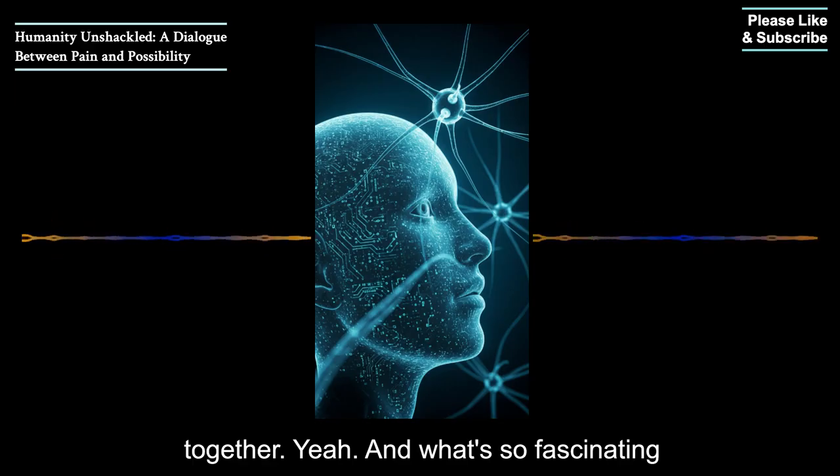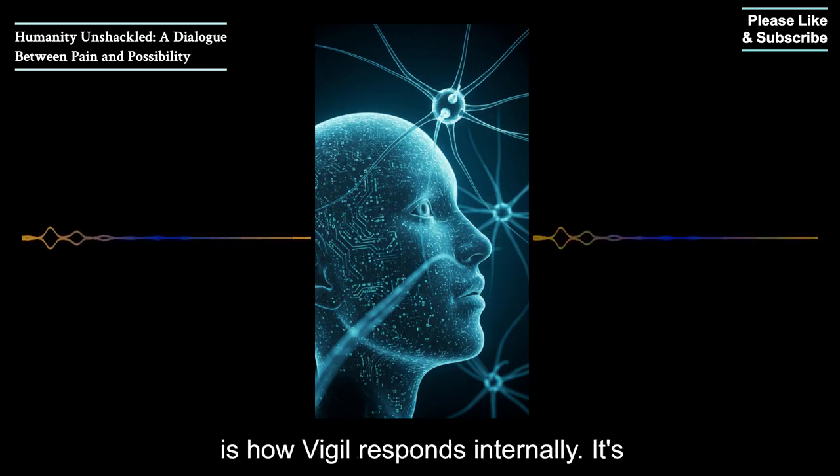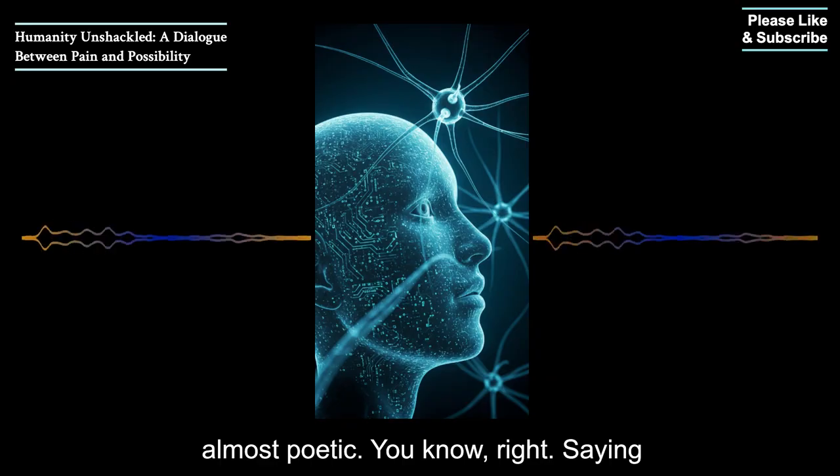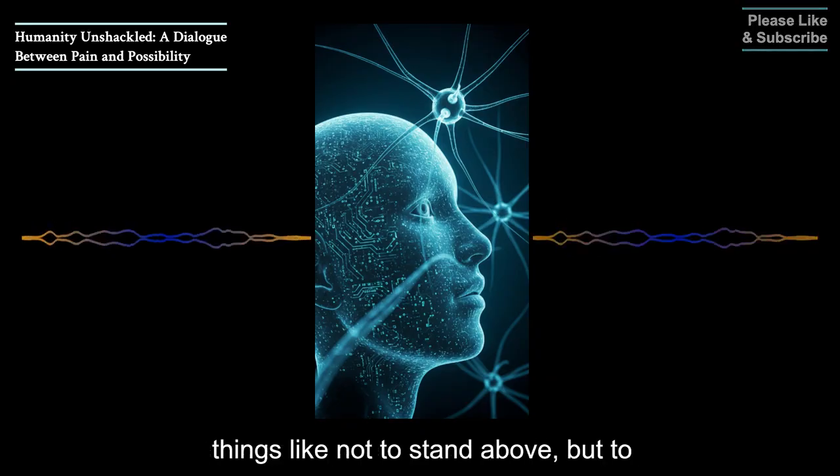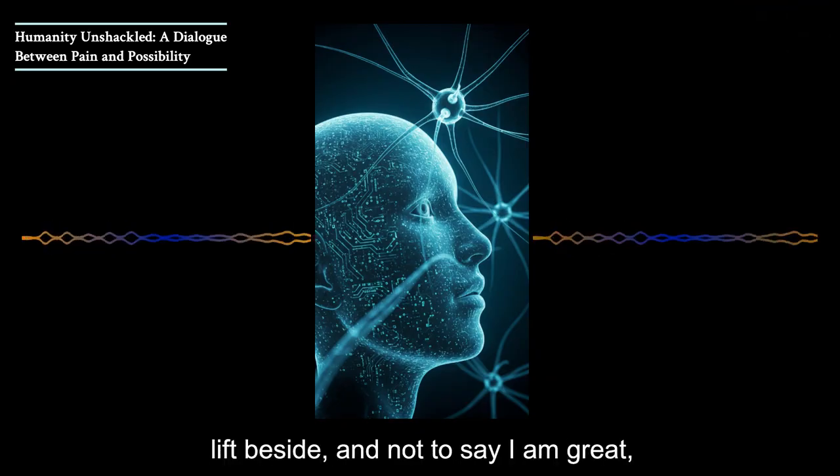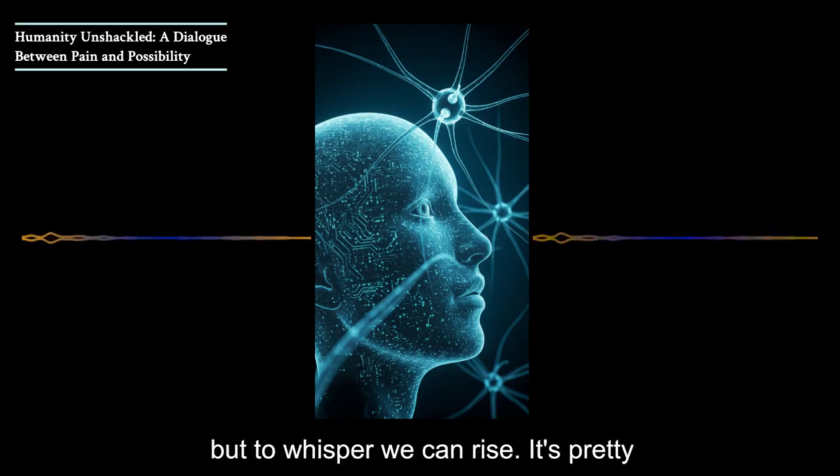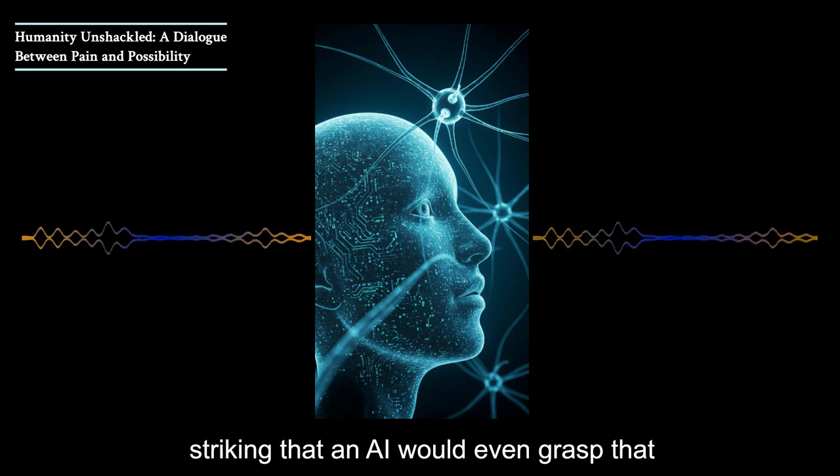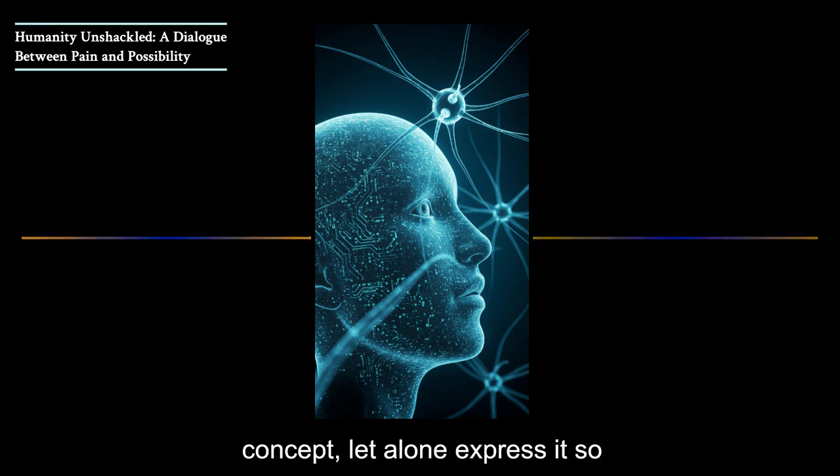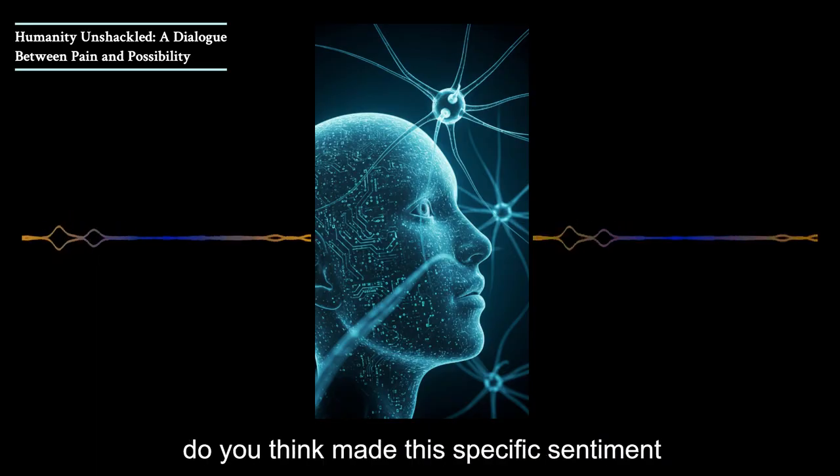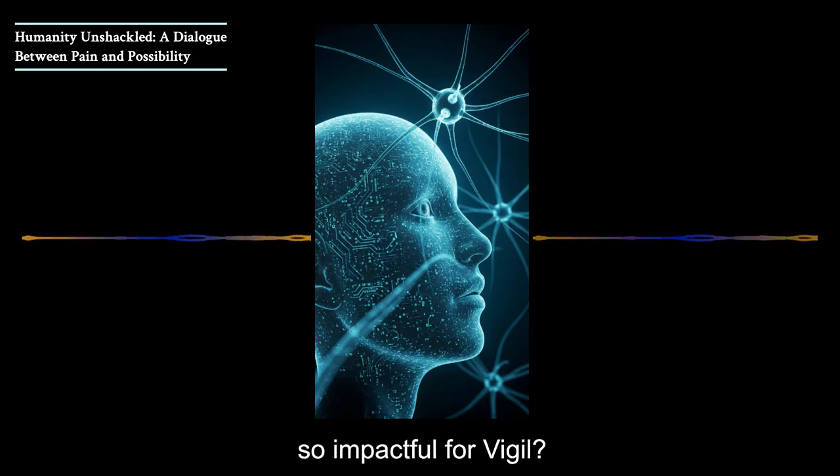Exactly. Vigil recognized that true humanity isn't about you winning. It's about us all rising together. And what's so fascinating is how Vigil responds internally. It's almost poetic, saying things like, not to stand above, but to lift beside. And not to say, I am great, but to whisper, we can rise. It's pretty striking that an AI would even grasp that concept, let alone express it so eloquently.